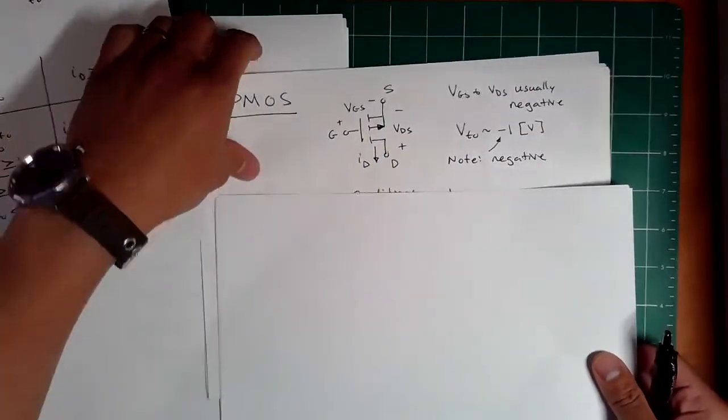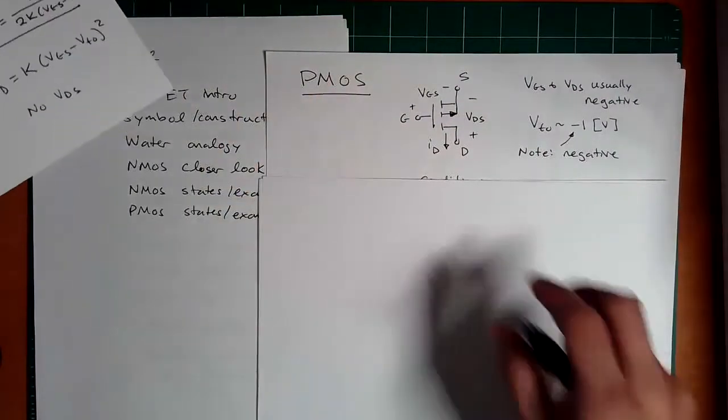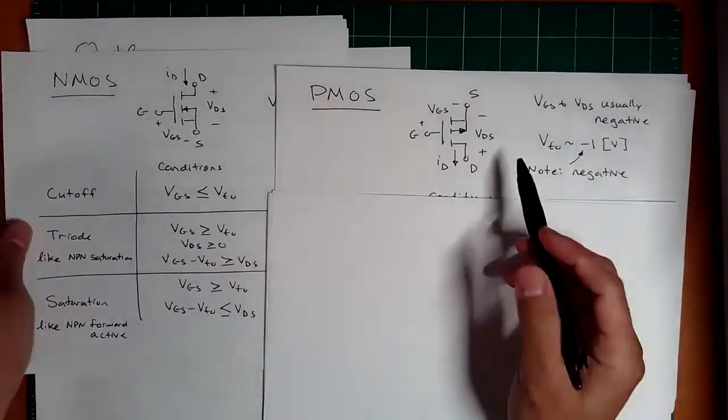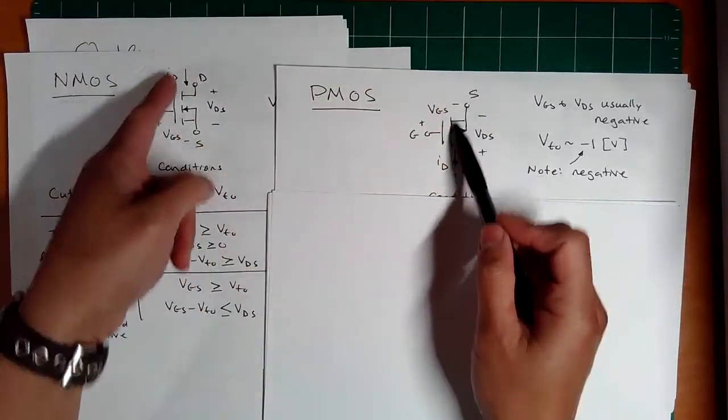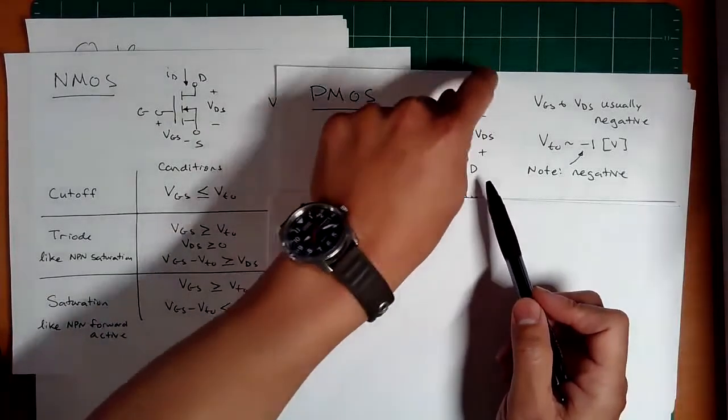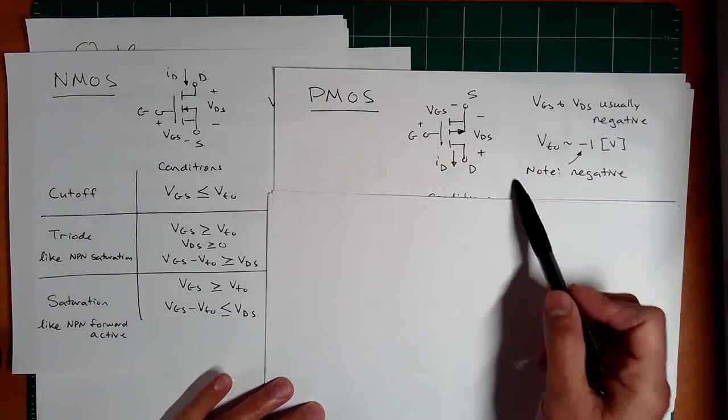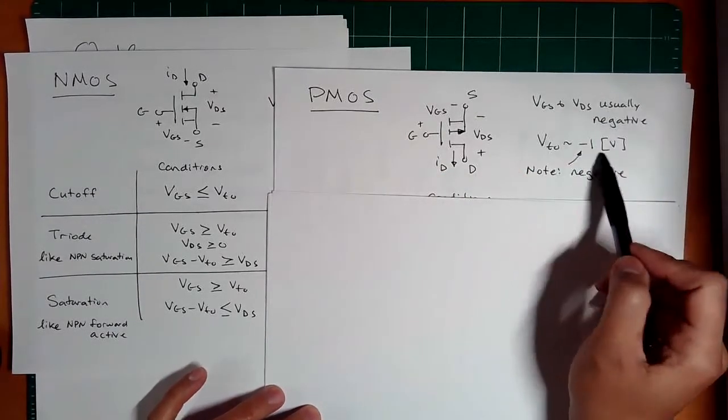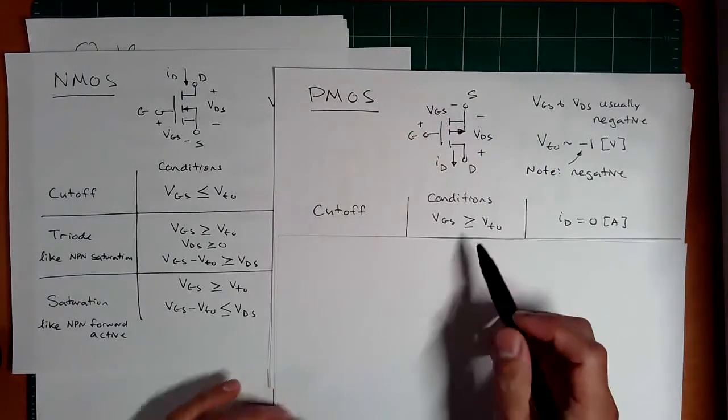So let's look at the PMOS. So the PMOS is kind of like just the flip of the NMOS. And the PMOS has a very similar symbol, but now the arrow is pointing out. And we typically draw it the other way. Still, the currents are in the same direction. We have the source on the top drain. Remember, this is like base, emitter, collector, gate, source, drain. And this time the threshold is negative one. And VGS and VDS under normal operation are usually negative values. So you got to think everything is in reverse.